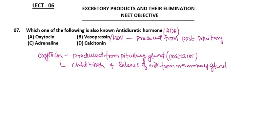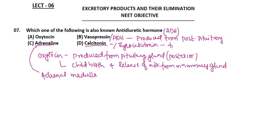Adrenaline is produced from the adrenal medulla of the adrenal gland. Calcitonin — also called thyrocalcitonin — is a hormone from the thyroid gland. We will see all these hormones again in the endocrine system chapter. So vasopressin is also called the anti-diuretic hormone — the answer is B.